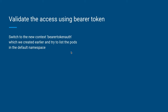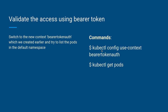Once the role and role binding are created, we validate access using kubectl with the required context. In our kubectl configuration, we created a new context named bearer-token-auth. We need to switch to that bearer-token-auth context and try to access the pods in the default namespace. The command is: kubectl config use-context and the context name to switch, then list the pods within the default namespace to verify everything works correctly.